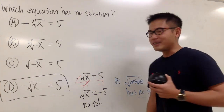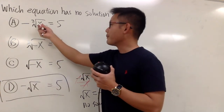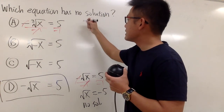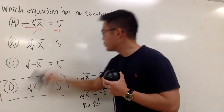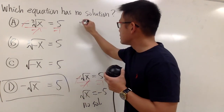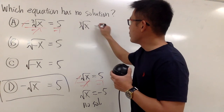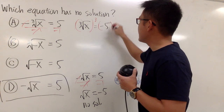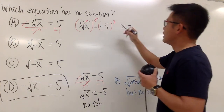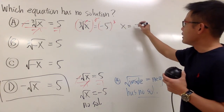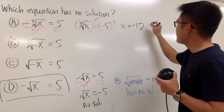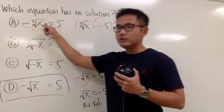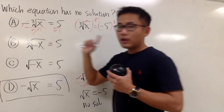I'll also show you how to solve the other equations. For this one, divide both sides by negative 1, and you get the cube root of x equal to negative 5. This is actually doable — we can just cube both sides, and x equals negative 5 to the third power, which is negative 125.